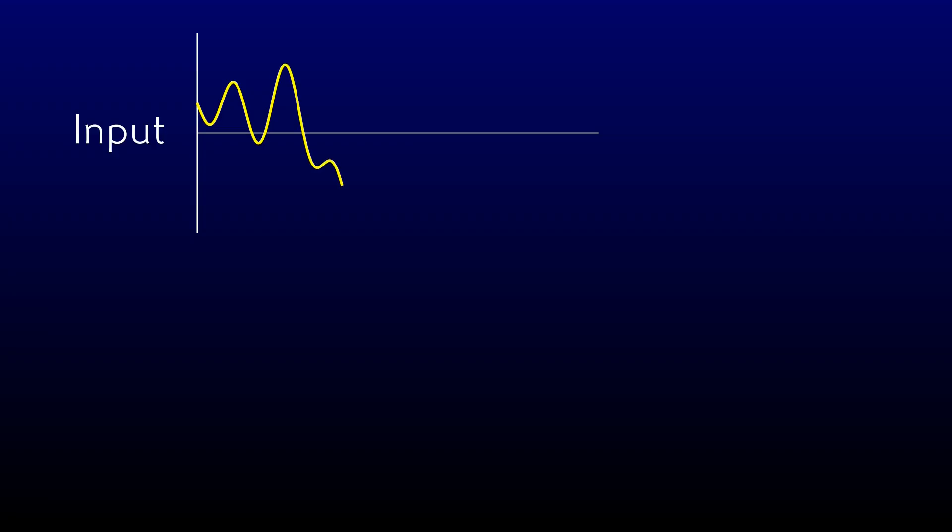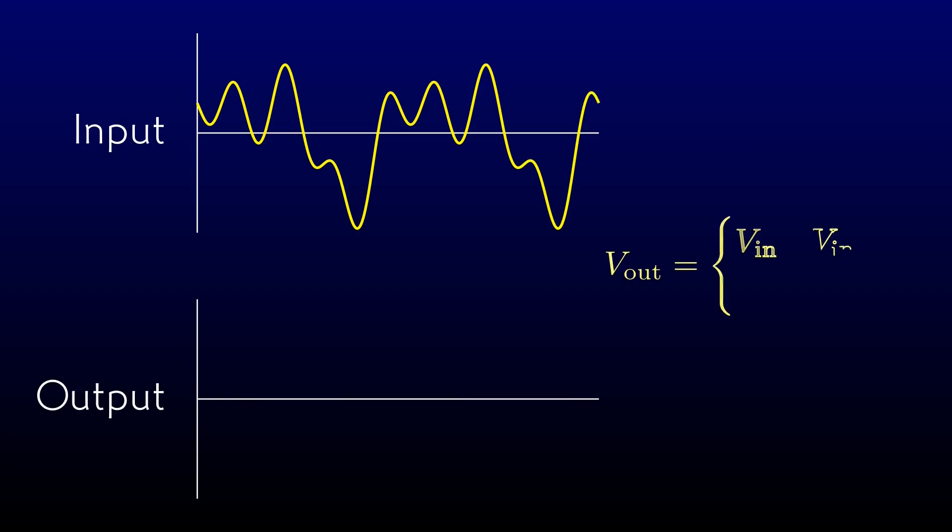The idea here is that we will take some voltage varying arbitrarily over time and generate an output voltage that follows the input when it's positive, but gets clamped to ground when it's negative.